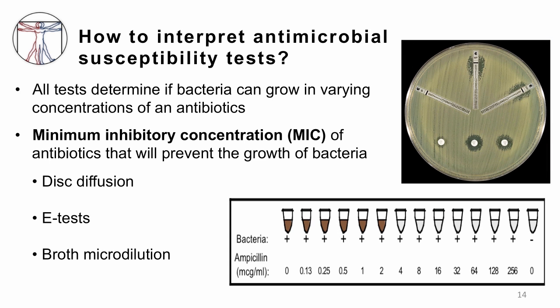How do you interpret antimicrobial susceptibility testing? These tests determine if bacteria can grow in varying concentrations of antibiotics. The term you'll probably hear is MIC, or minimum inhibitory concentration — the minimum concentration of antibiotic that will prevent the growth of bacteria. One method is disc diffusion testing. Here, an antibiotic disc seeps out onto an agar plate that has been streaked with bacteria. You can see that the bacteria on the plate are not able to get close to the disc, implying that the bacteria is probably susceptible to that antibiotic and can be killed by it.